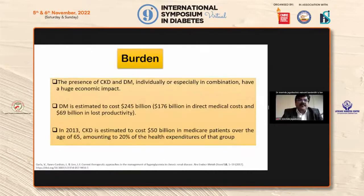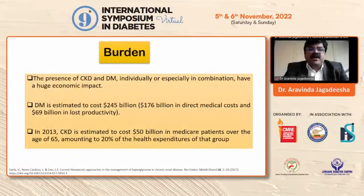Looking at the burden, the presence of CKD and diabetes individually, or especially in combination, have a huge economic impact. Diabetes is estimated to cost $245 billion — indirect medical costs around $176 billion and lost productivity around $69 billion. In 2013, CKD was estimated to cost $50 billion in Medicare patients over age 65, amounting to 20% of health expenditures.